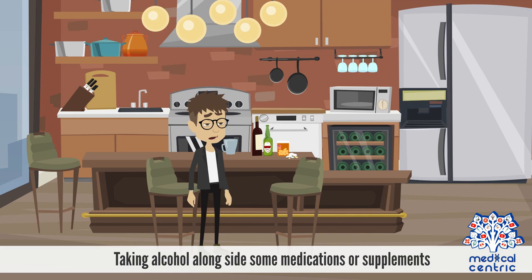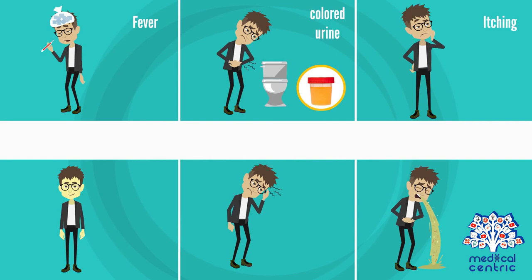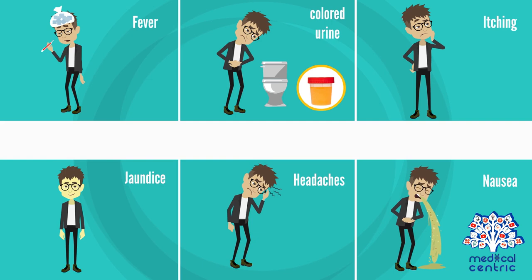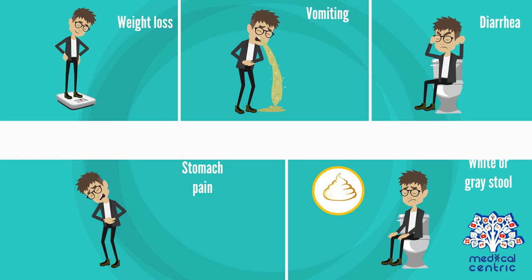Symptoms of drug-induced liver disease include fever, dark-colored urine, itching, jaundice, headaches, nausea, weight loss, vomiting, diarrhea, stomach pain, and white or gray stool.